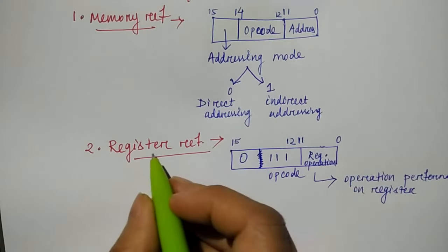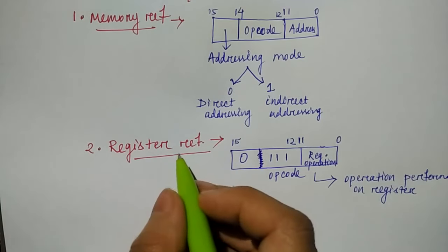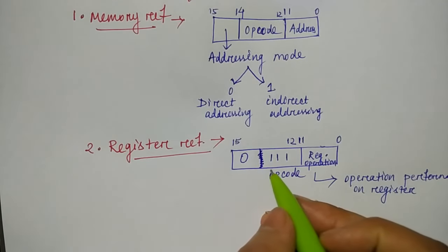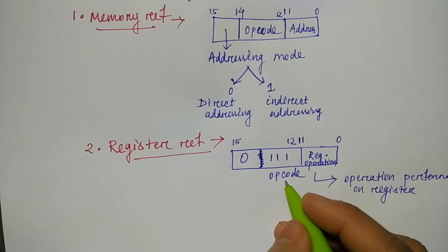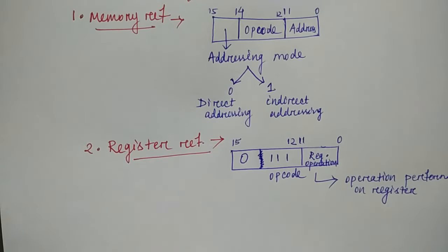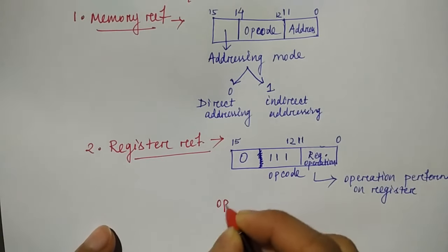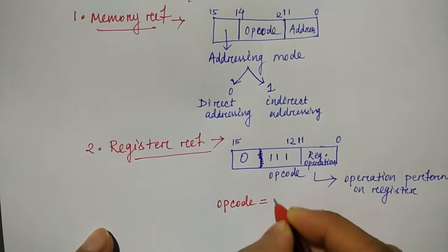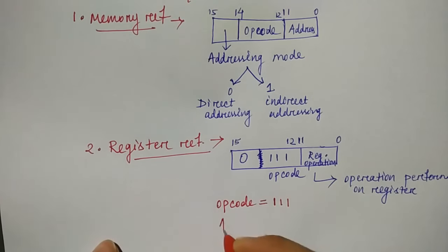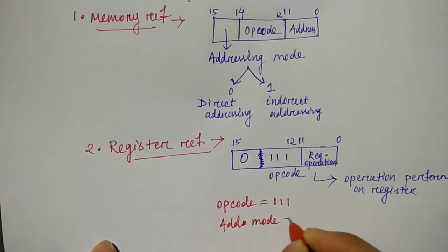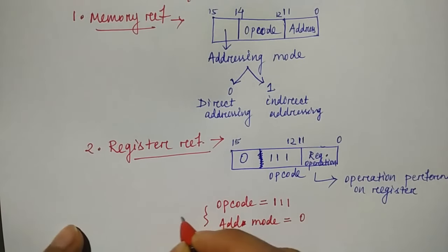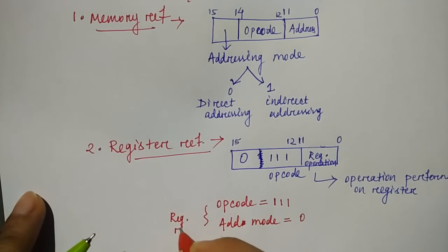And the 15th bit, what is present there? In the first three, 111 is stored. This is the opcode. So what happens here? If you have 111 present in your opcode part and in addressing mode 0 is present, then you have to confirm that this is the register reference.